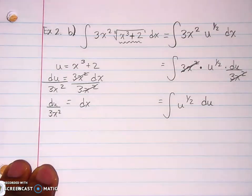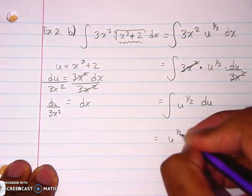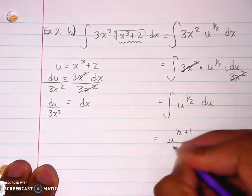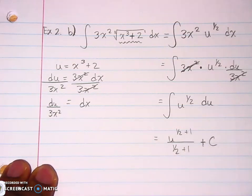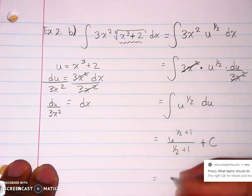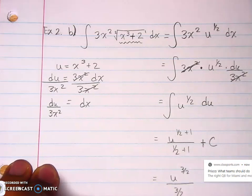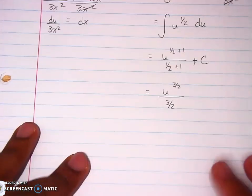We're going to add 1 divided by new exponent. Okay, so we add them up. That will be 3 halves over 3 halves, U to the 3 halves power over 3 halves. All in the way—sorry about that—plus C.